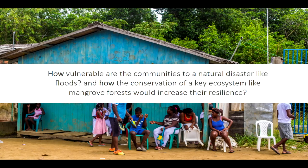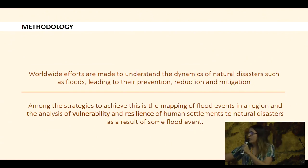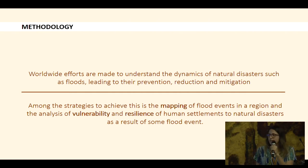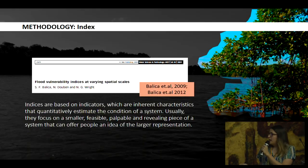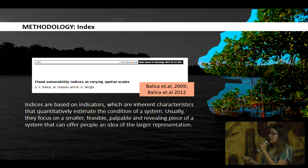As part of the project, we want to answer two questions: How vulnerable are the communities to a natural disaster like floods? And how will the conservation of a key ecosystem like mangrove forests increase their resilience? Among the strategies to address these questions is the mapping of flood events in our region and the analysis of flood vulnerability and resilience of human settlements. To assess vulnerability and resilience, we used an index developed by Balica in 2009, which is used by UNESCO, though we had to make many modifications.